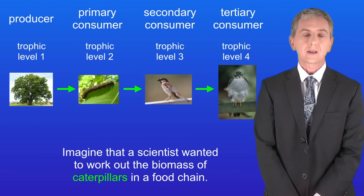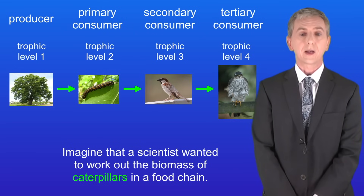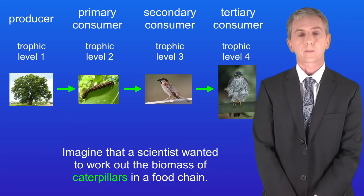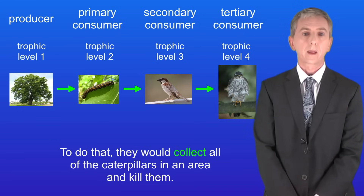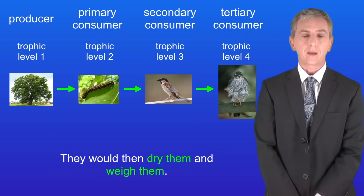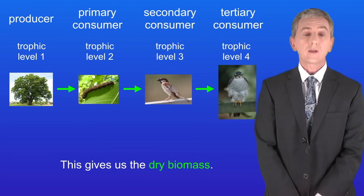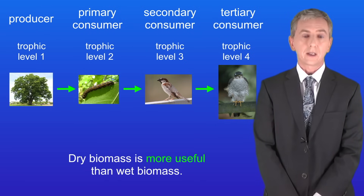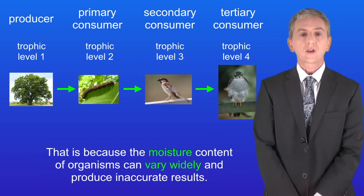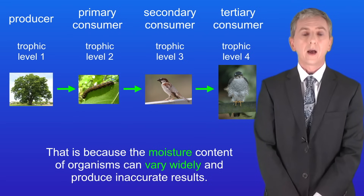Imagine that a scientist wanted to work out the biomass of caterpillars in a food chain. To do that they would collect all of the caterpillars in an area and kill them. They would then dry them and weigh them. This gives us the dry biomass. Dry biomass is more useful than wet biomass because the moisture content of organisms can vary widely and produce inaccurate results.